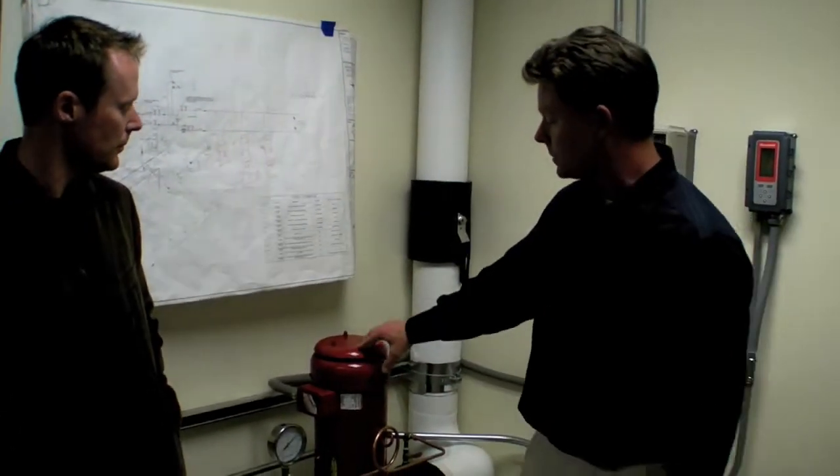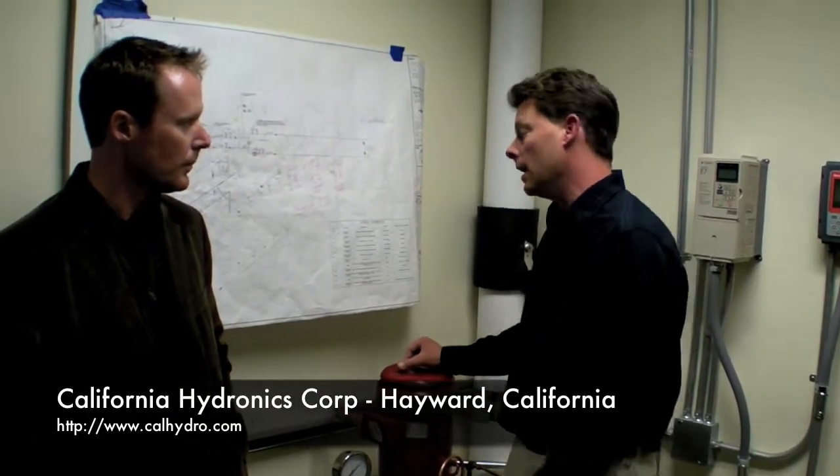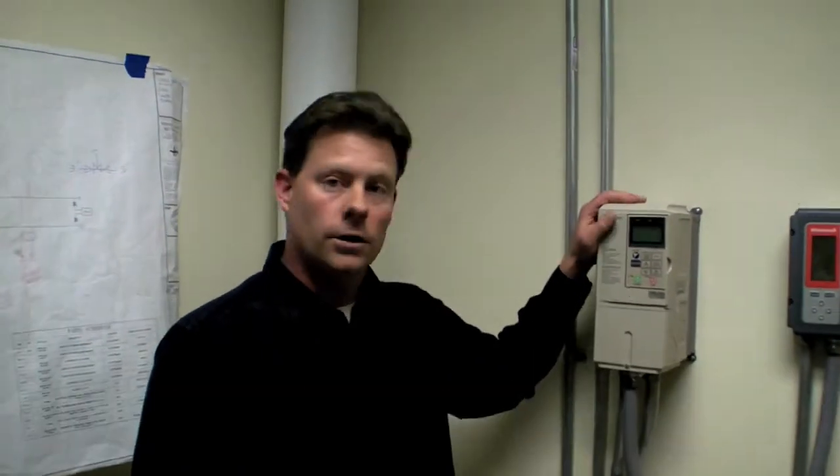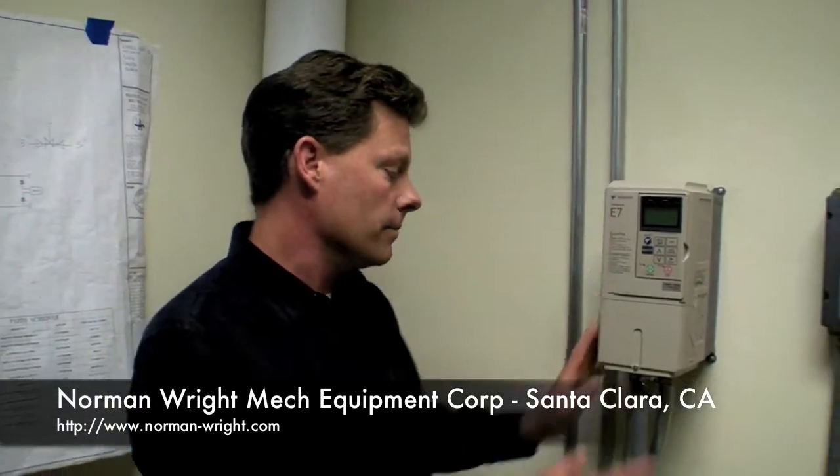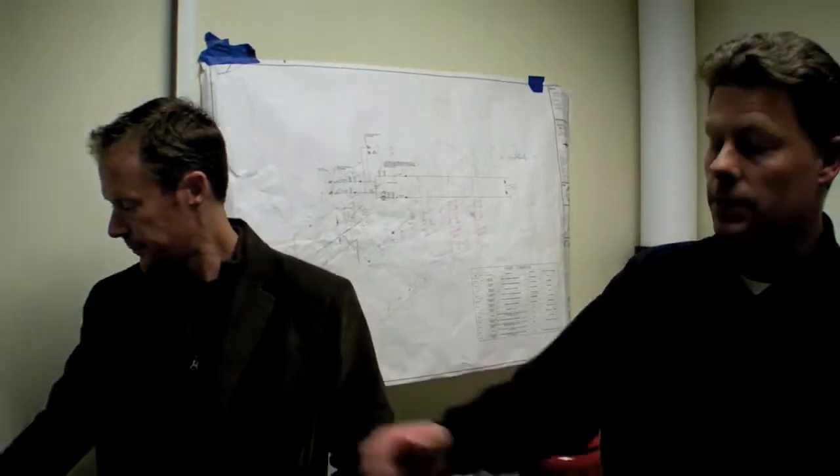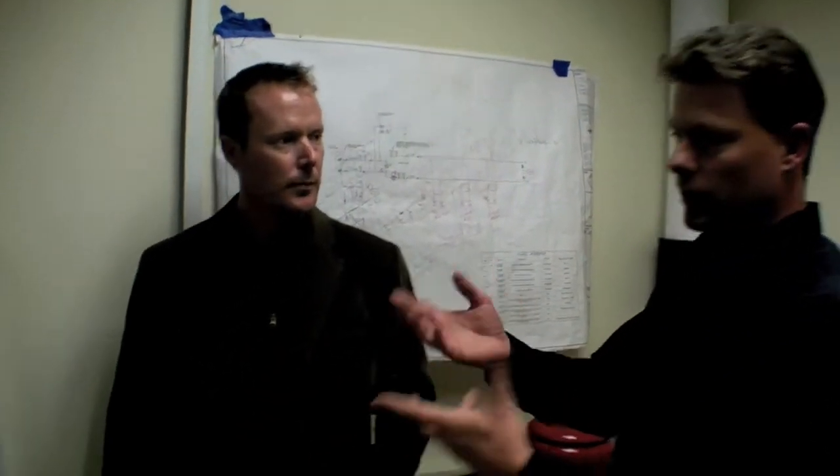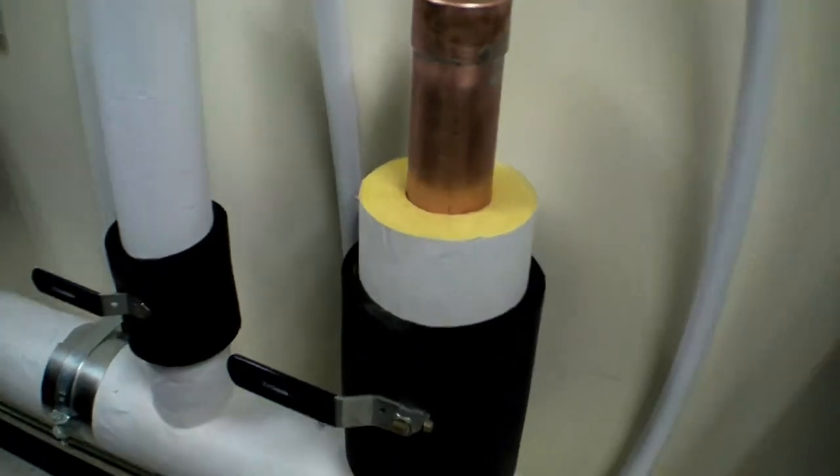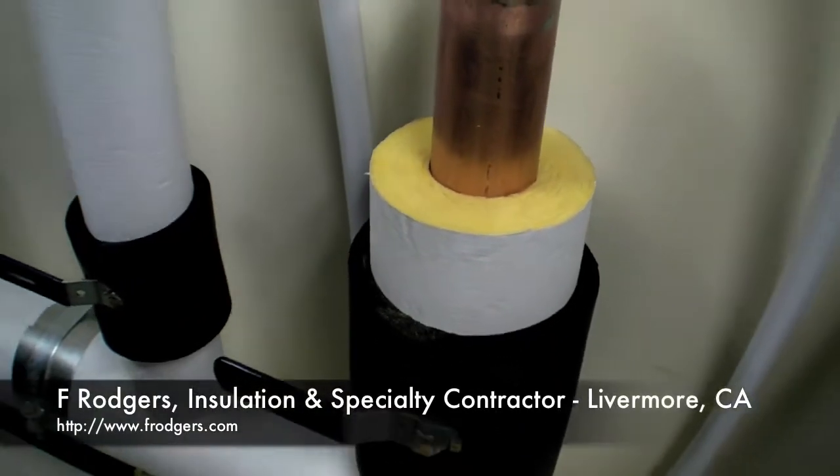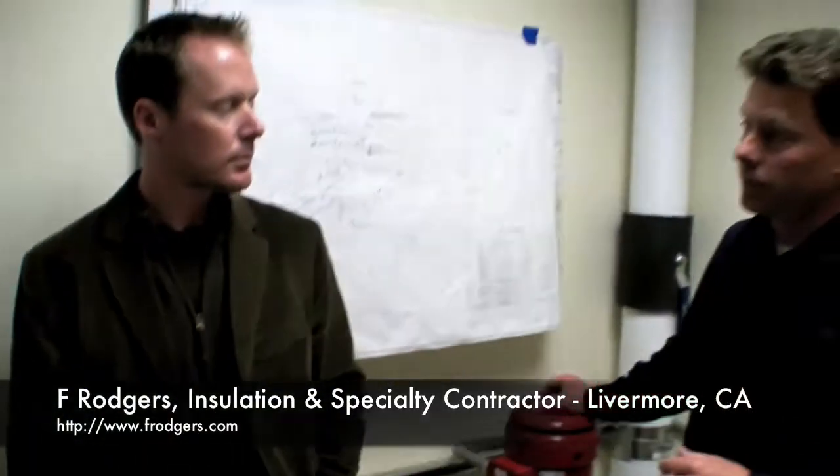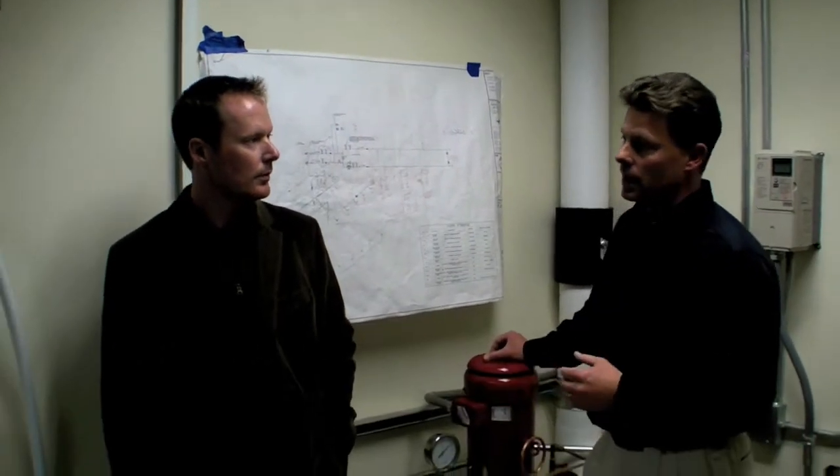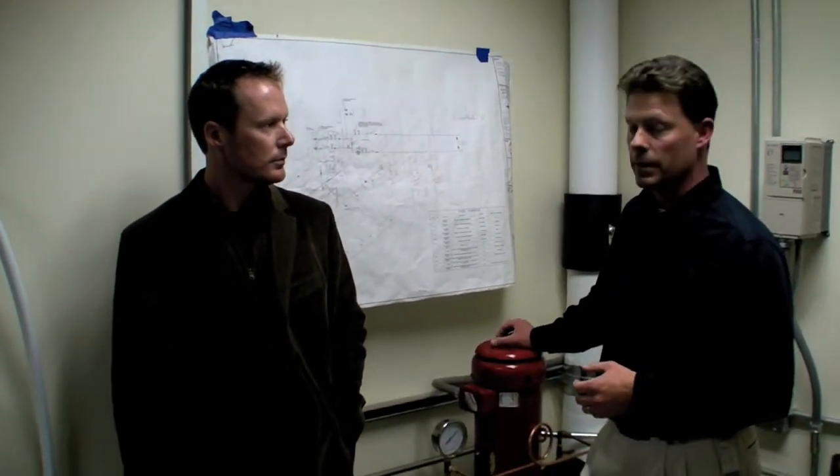We were able to get some components donated from manufacturers that helped them out on building the system. So the pump here was donated by Cal Hydronics. The VFD behind me was donated by Norman Wright. And the insulation around the pipe so we don't have any condensation issues was donated by F Rogers. There's been a tremendous amount of folks that have been putting this together for us and donating their time and effort to make this a success.